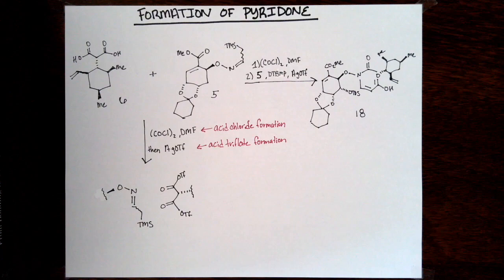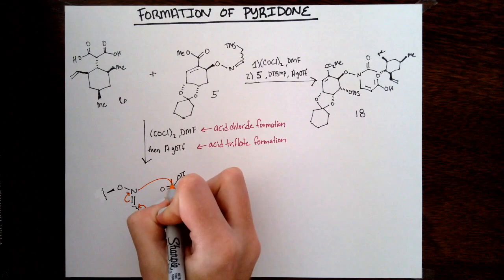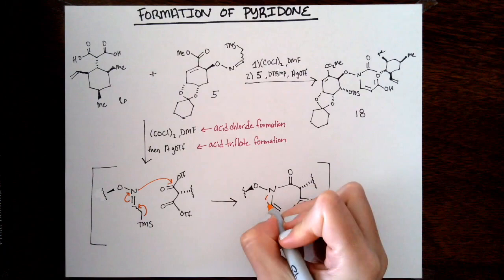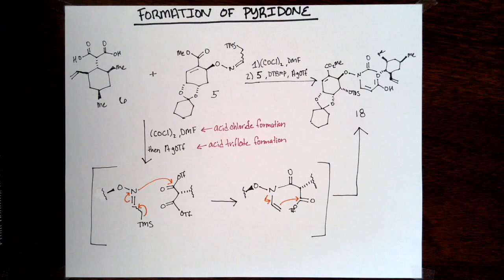After the condensation, the group has now constructed both of the fragments needed to do the key cyclization that they talked about initially. This reaction proceeds first through acyl chloride formation from the diacid, followed by in situ acyl triflate formation with silver triflate. That's just to make a stronger electrophile, which we'll talk about more in depth in a bit.